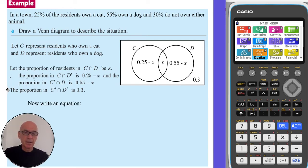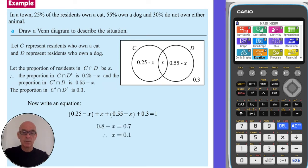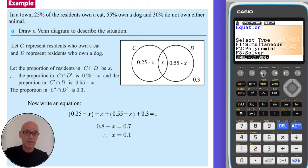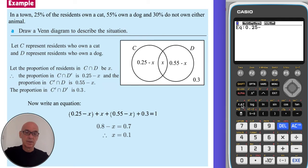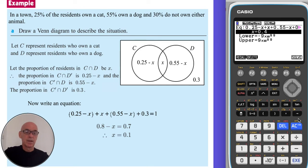We write an equation by adding all four sections of the Venn diagram and solve it. Solving algebraically gives x equals 0.1. You can also solve it on your calculator: go to menu, equation, F3 to solve. Type in the equation: 0.25 minus x, plus x, plus 0.55 minus x, plus 0.3, equals 1. Press F6 to solve, and again we get x equals 0.1.